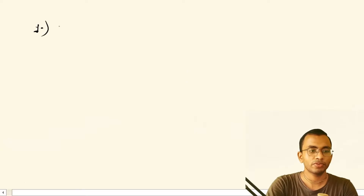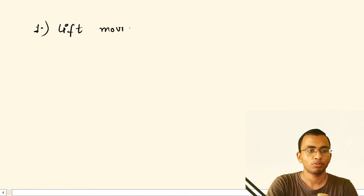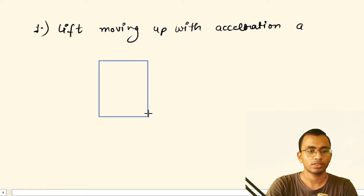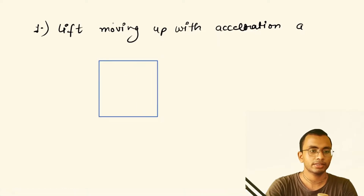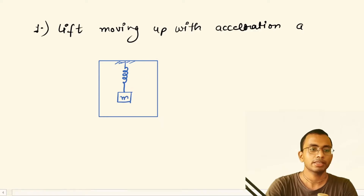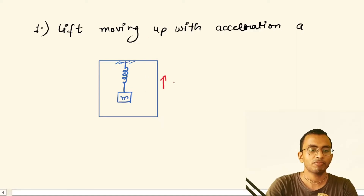Let us find the first case: when the lift is moving up with acceleration a. This is our lift, and inside this lift a spring is hanging, which is used to measure the weight of the block. This is our mass m, and this entire system is moving up with acceleration a.